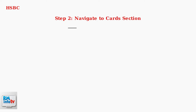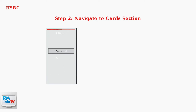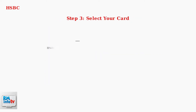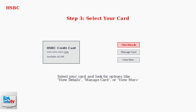Once logged in, navigate to the Cards section in your main menu. This is typically found on the home screen or main navigation area of the app. Select the specific card you want to view. Look for options such as View Details, Manage Card, or View More to access your card information.